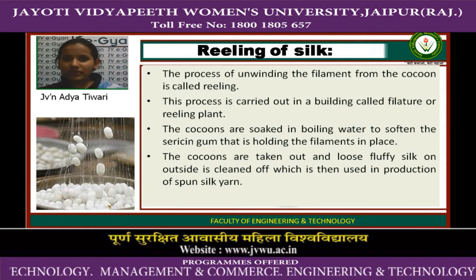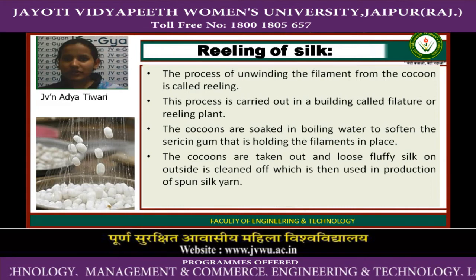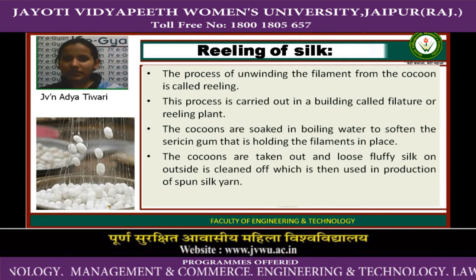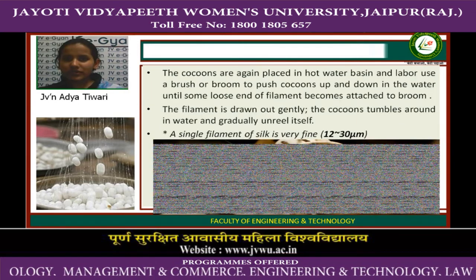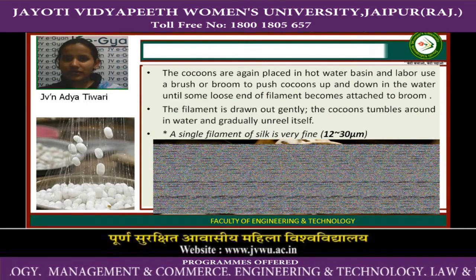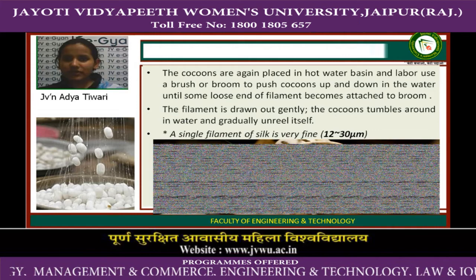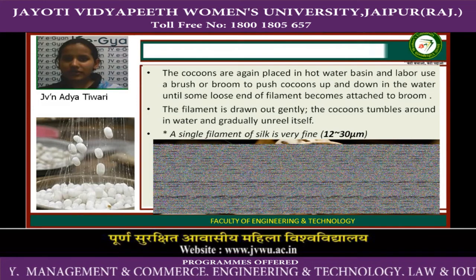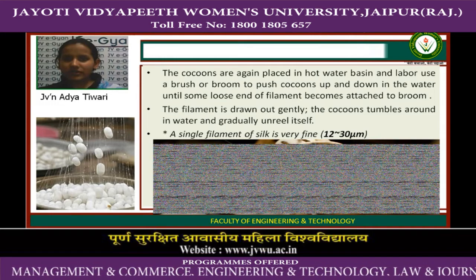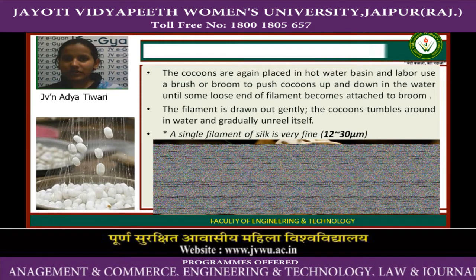The cocoons are taken out and the loose fluffy silk on the outside is removed, which is then used in production of spun silk yarn. The cocoons are again placed in a hot water basin and workers use brushes or brooms to push the cocoons up and down in the water until some loose end of filament becomes attached to the broom. The filament is drawn out gently and the cocoon unwinds itself in the water and gradually unreels itself.